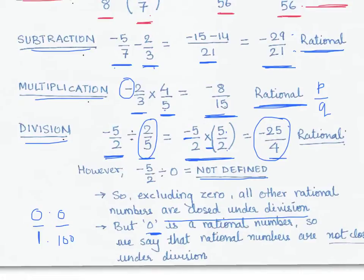To summarize: we have proven the closure property for addition, subtraction, multiplication, and division of rational numbers. Rational numbers are closed under addition, subtraction, and multiplication. They are not closed under division, primarily because of 0. If we were to exclude 0, then dividing any two rational numbers would always yield a rational number.